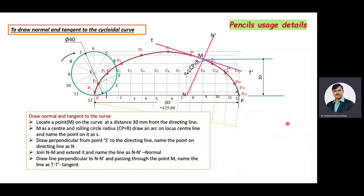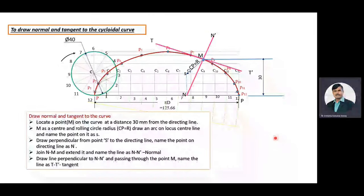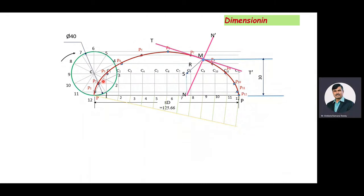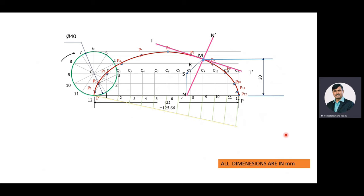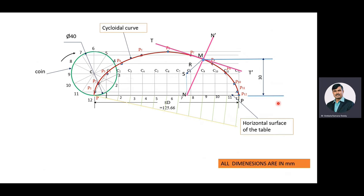The construction lines are drawn with a 3H pencil, dimensioning with a 2H pencil, and the cycloidal curve, normal, and tangent with an H pencil. The diameter of the coin is 40 mm. The length of the directing line equals the circumference of the rolling circle = 125.66 mm. The tangent point is at a distance of 30 mm from the horizontal surface of the table. All dimensions are in millimeters.